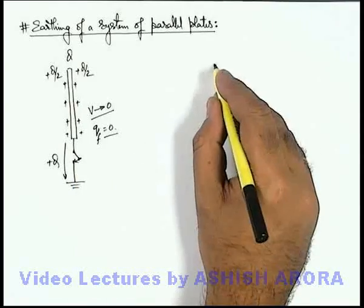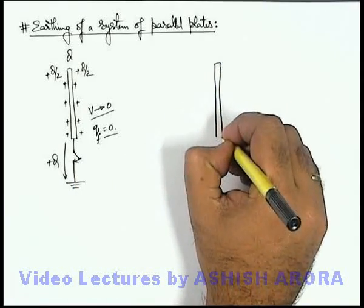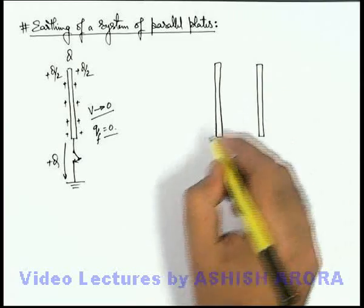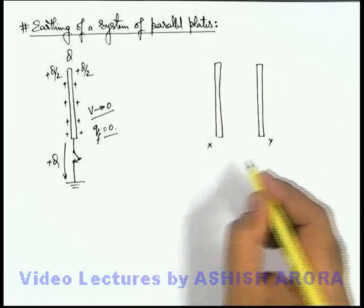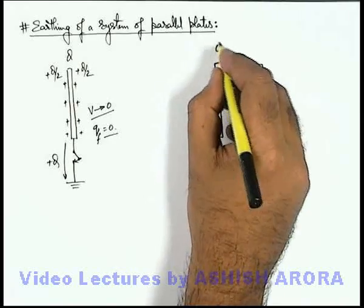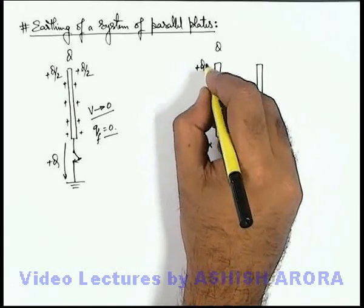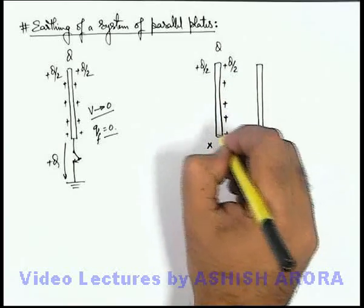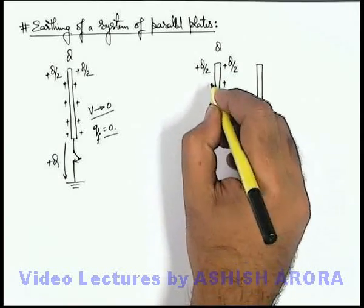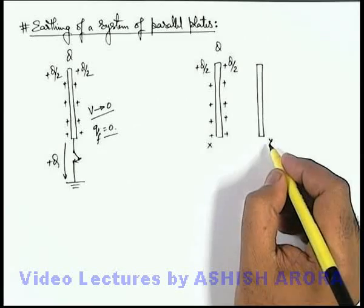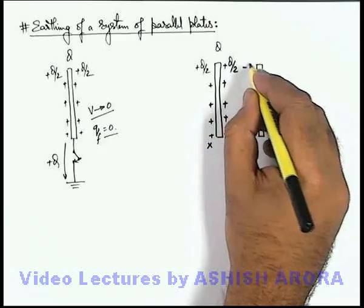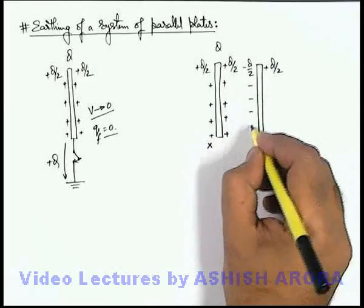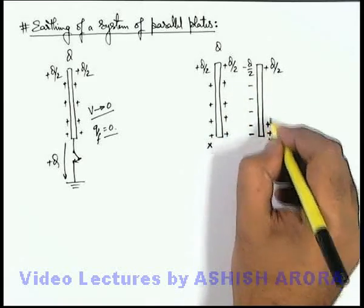Now if we consider a system in which there are two plates — one is charged and the other is uncharged — say plate X and plate Y. Plate X is given a charge q, due to which it is divided equally: plus q by 2 and plus q by 2 on the two faces of it. Plate Y is uncharged, so a charge of minus q by 2 and plus q by 2 is induced, according to the concept we already discussed in the previous section.